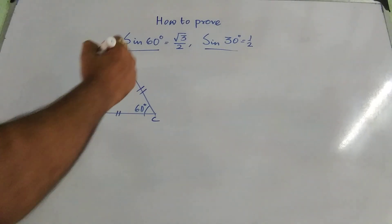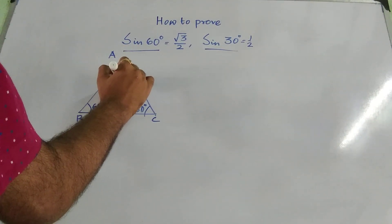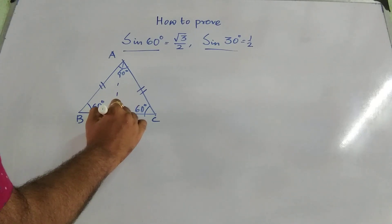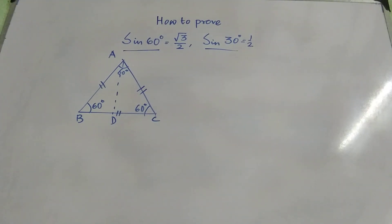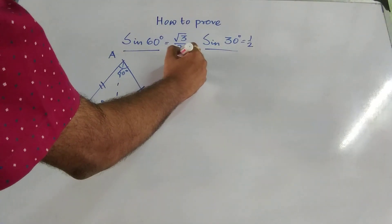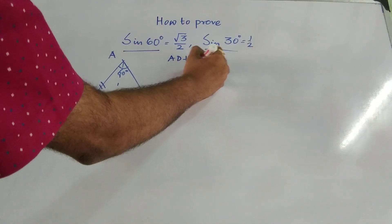So for deriving this, what I am doing, I am just dropping a perpendicular from A on the base BC, which is intersecting the base BC at D. So AD is a perpendicular which is on the base BC.